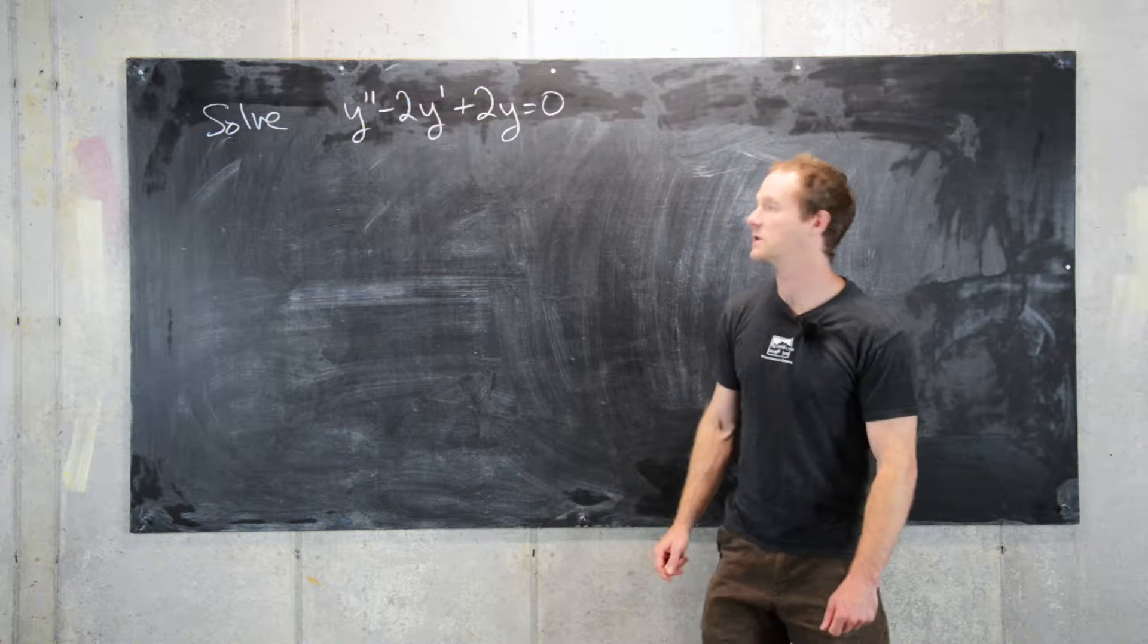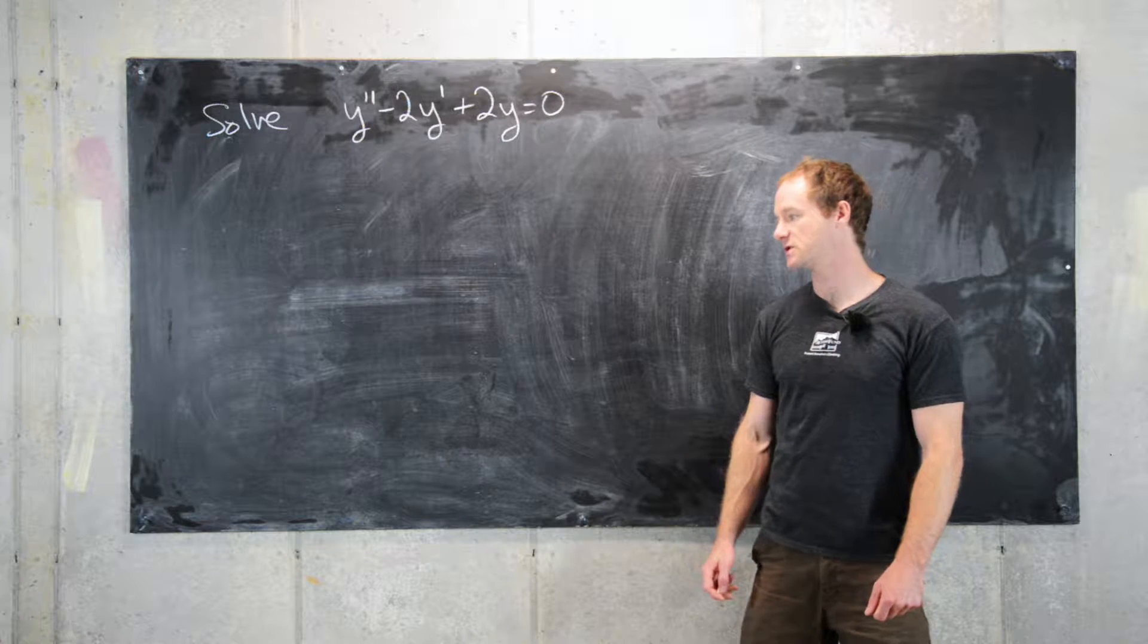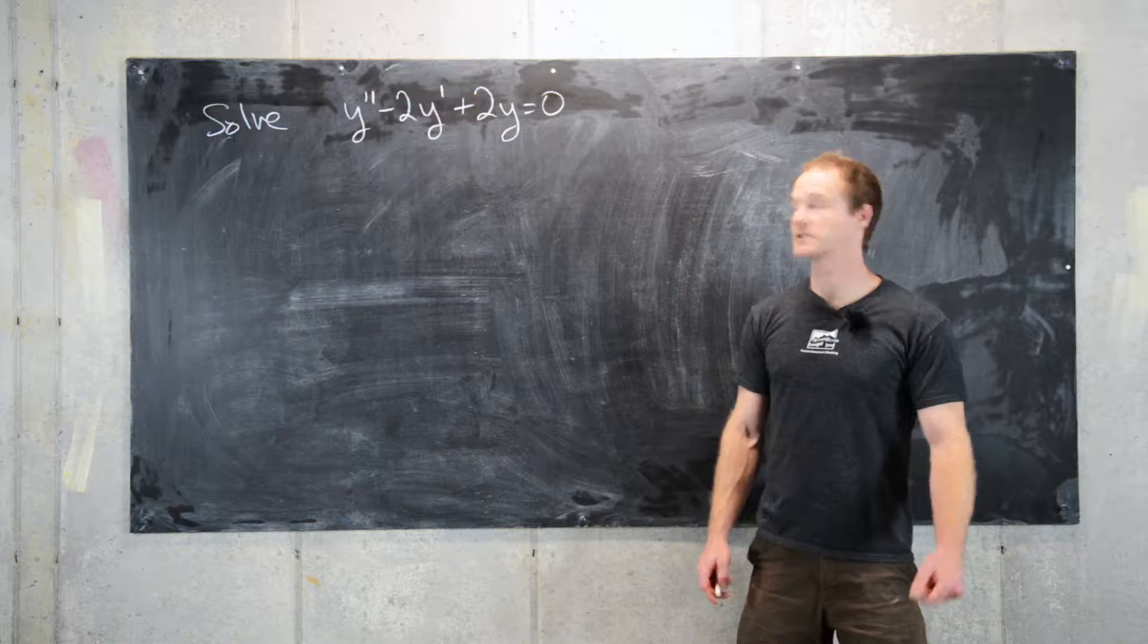Okay, here we have a second order linear homogeneous differential equation with constant coefficients. So in order to solve this, we need to look at some corresponding polynomial.